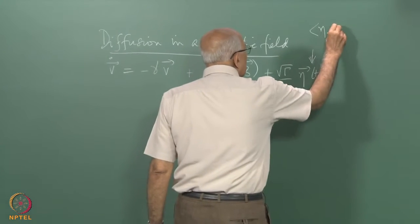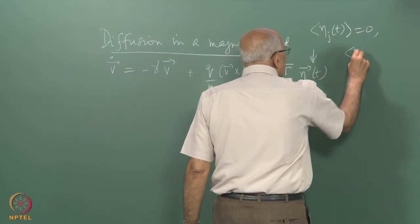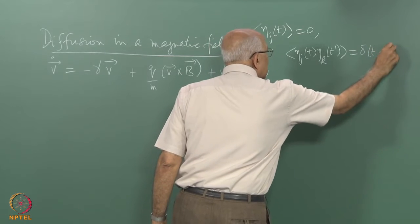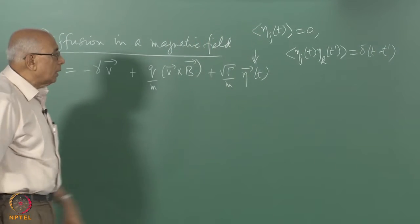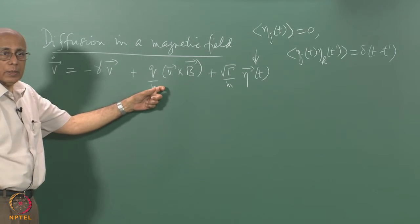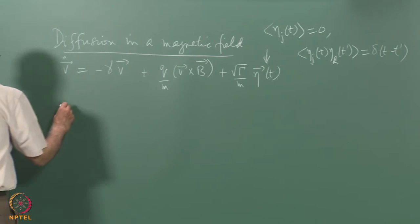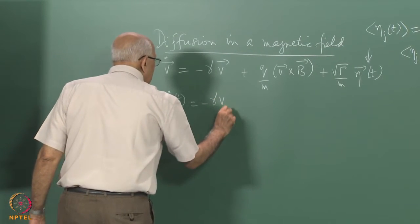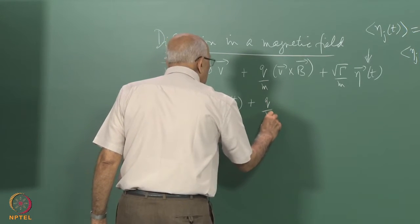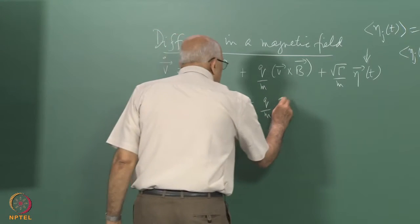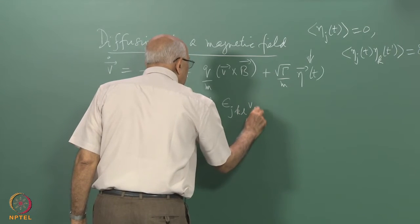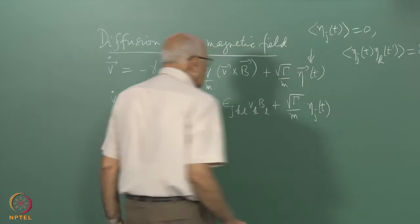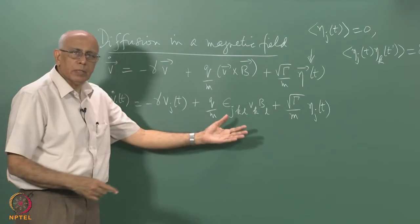The noise properties are: any component eta_j(t) has zero average, and the correlation eta_j(t) eta_k(t') equals delta(t − t'). This is the usual Gaussian white noise. In component form, V_j-dot(t) equals minus gamma V_j(t) plus q over m times epsilon_{jkl} V_k B_l plus sqrt(gamma/m) eta_j(t) for each Cartesian component. The components are mixed up with each other because of the magnetic field.